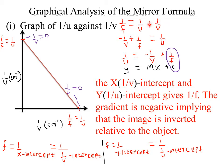To achieve that, we leave 1/u on one side alone, meaning we remove positive 1/v from the right side. When it crosses the equal sign it becomes negative, so we have: 1/u = −1/v + 1/f. This can also be written starting with 1/u: 1/u = −1/v + 1/f, as long as we do not interfere with the signs.